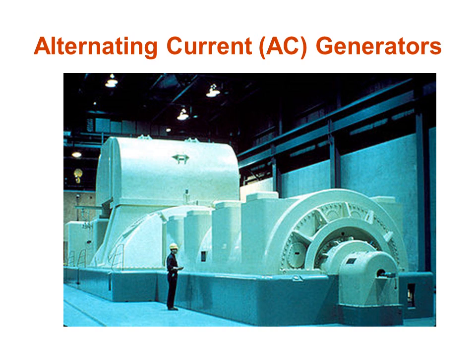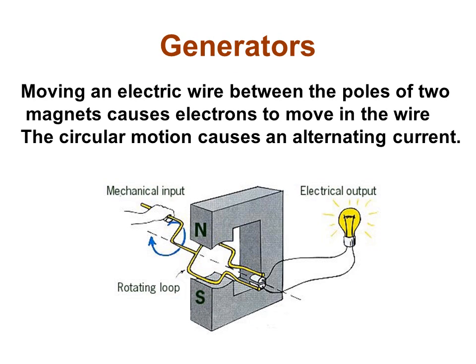This presentation covers alternating current, or AC generators. Moving an electric wire between the poles of two magnets causes electrons to move in the wire, and circular motion causes an alternating current.